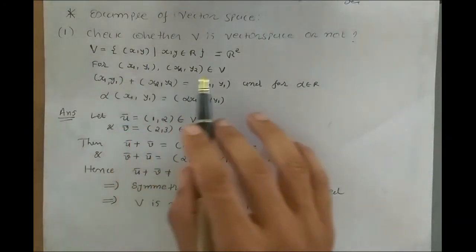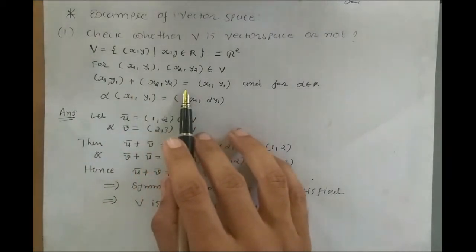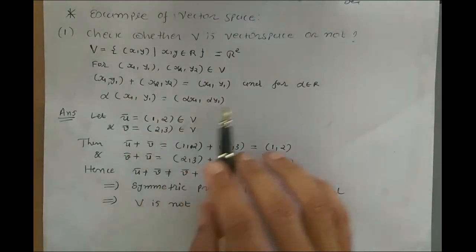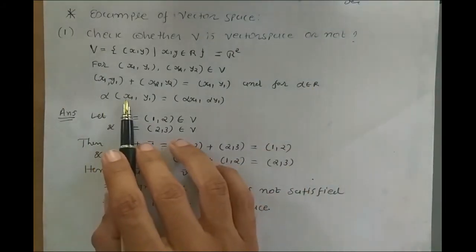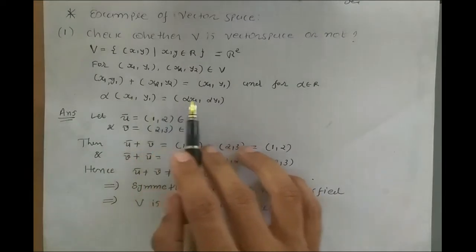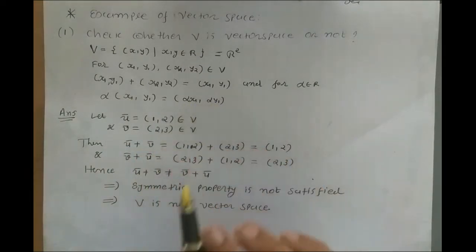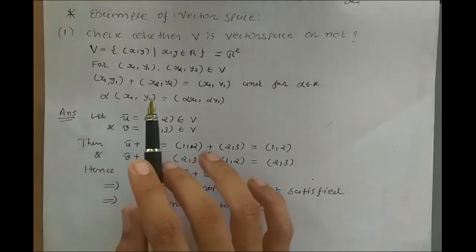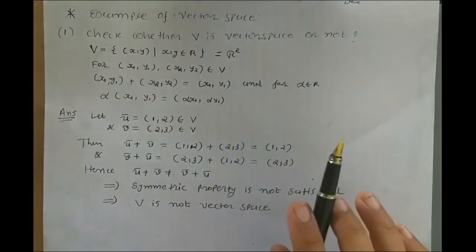The binary operation is defined as: (x₁, y₁) + (x₂, y₂) = (x₁, y₁). And for alpha belonging to R, scalar multiplication is defined as alpha · (x₁, y₁) = (alpha·x₁, alpha·y₁). Our aim is to prove whether V is a vector space or not.